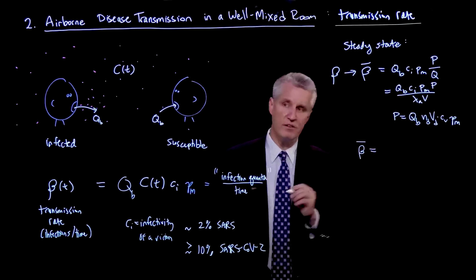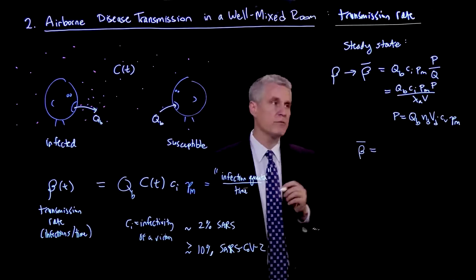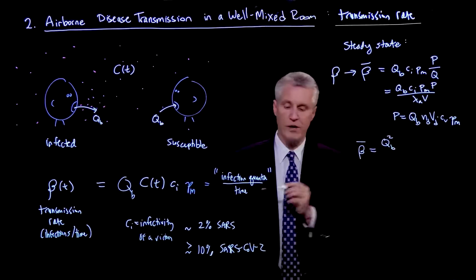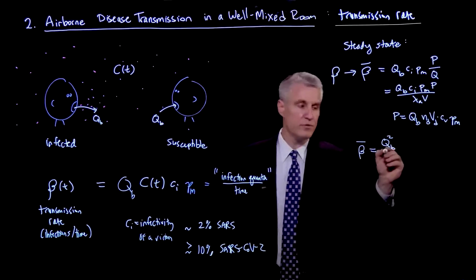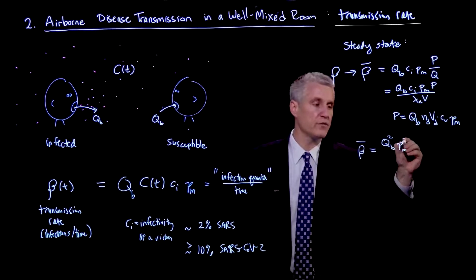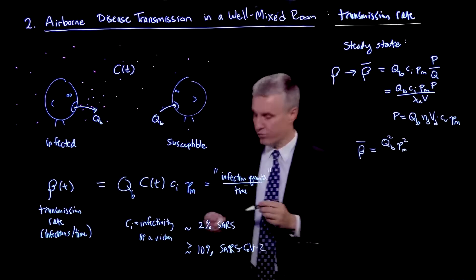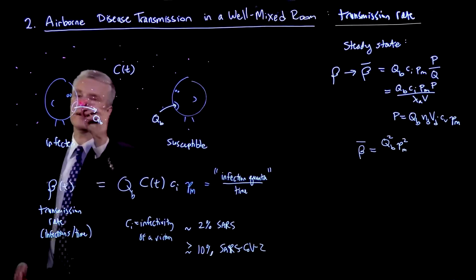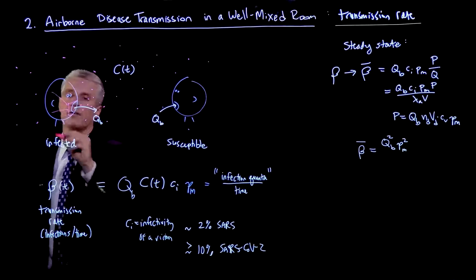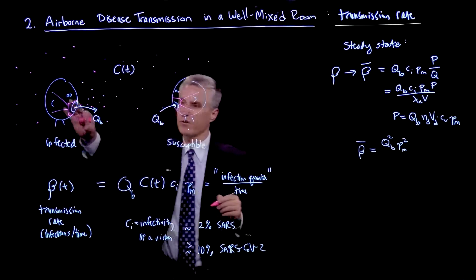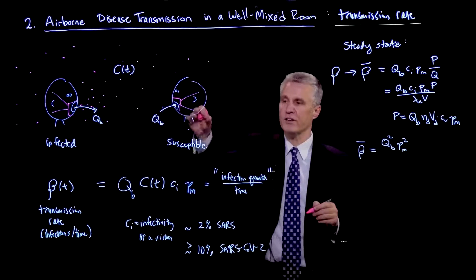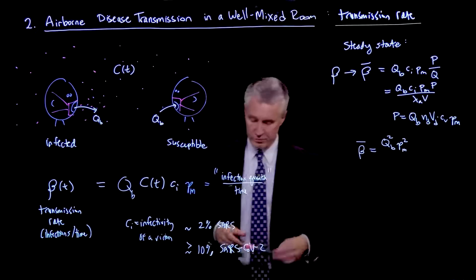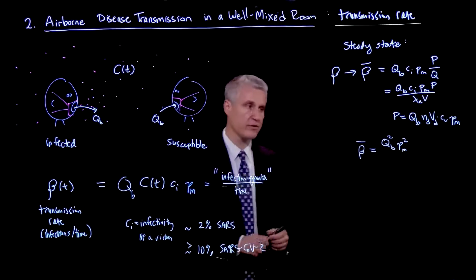So we put all this together, we get an important result here, which is that the steady state transmission rate can be written, when I plug in here, as QB squared times PM squared. So the mask factor comes in twice, because if they are wearing masks, there's two masks. You have a mask at the source, you also have a mask at the target. And the fluid has to go through both of those filters. So that's one reason, as we will see, that masks can be actually very effective.